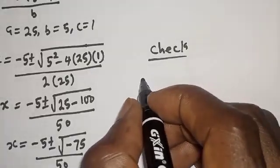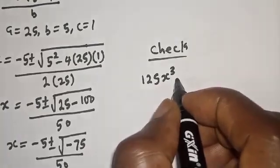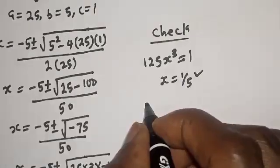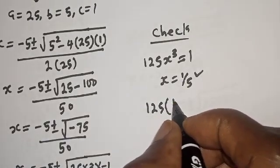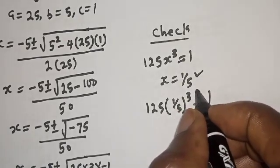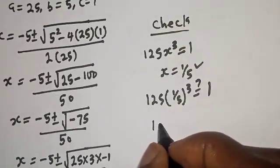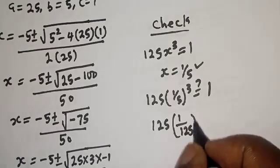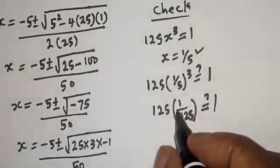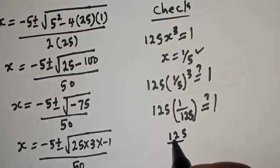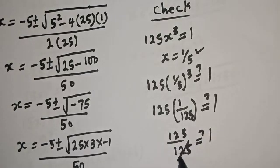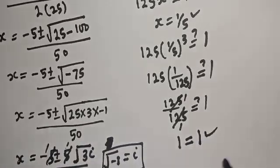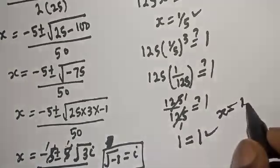Let's check with s equals 1/5 to confirm our answer. The given equation is 125s³ equal to 1. Substituting s equal to 1/5, we have 125 times (1/5)³ equal to 125 times 1/125, which equals 1. The left-hand side equals 1 and the right-hand side equals 1, so we satisfy the given equation at s equal to 1 over 5.